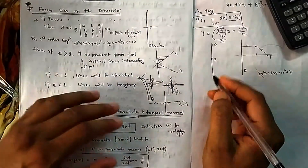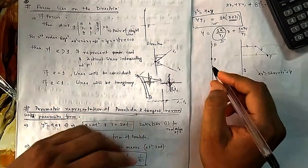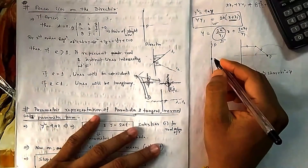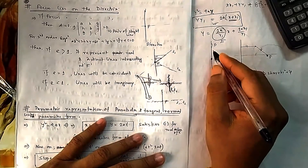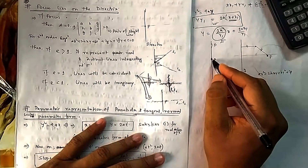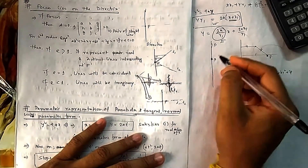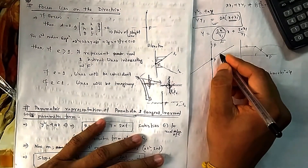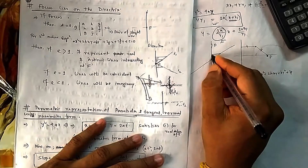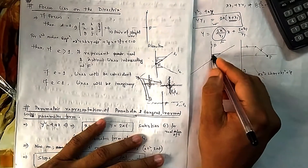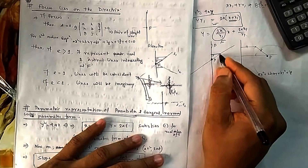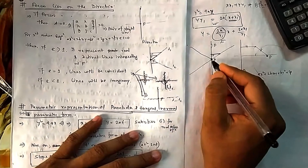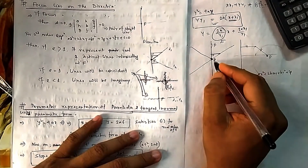Let's think geometrically how it gives a pair of straight lines. Suppose e > 1, meaning the distance from the point is greater than the distance from the line. The perpendicular distance from the line is like the height of a right triangle, while the distance from the focus is the hypotenuse. The hypotenuse is always greater, so with the same ratio you will find another line with the same slope.